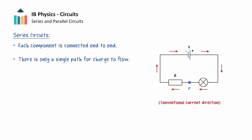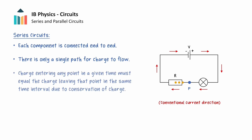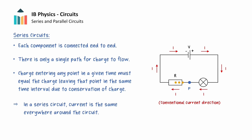Now let's consider point P in the circuit. The charge entering point P in the given time interval must be equal to the charge leaving point P in the same time interval, as a consequence of the conservation of charge. Moreover, this applies to any point around the circuit. Since there is only one path for charge to flow and charge cannot accumulate at any point, the current must have the same intensity everywhere around the series circuit.